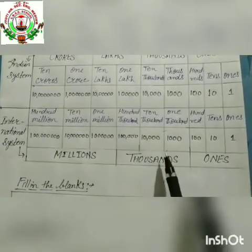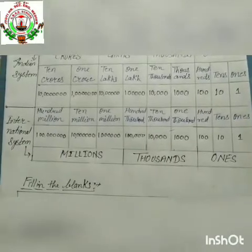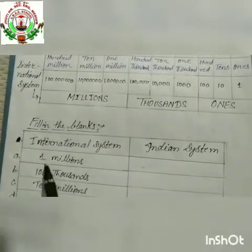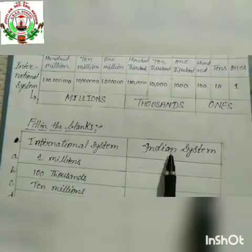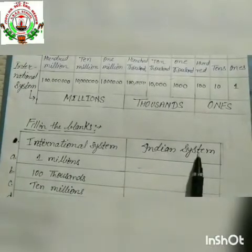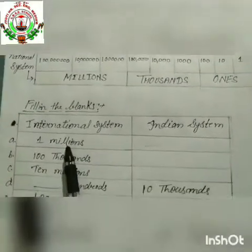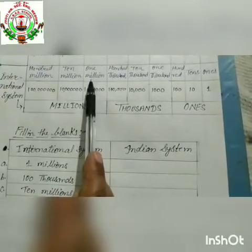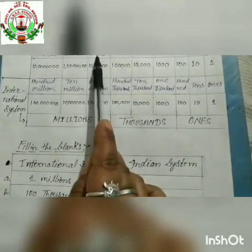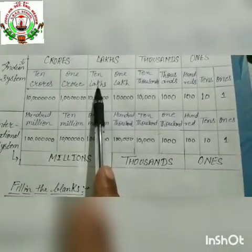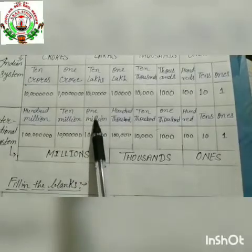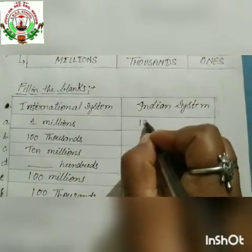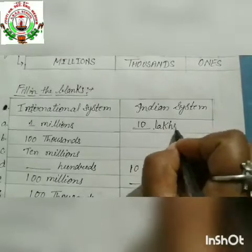Now in this comparison, we will fill in these blanks and understand the comparison of both systems. The first column is the international system and the second column is the Indian system. One million in the international system is equal to ten lakhs in the Indian system. So we write: one million equals ten lakhs.